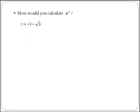How would you calculate z to the 5 if z is equal to minus 1 minus the square root of 3i? z to the 5 means multiplying minus 1 minus the square root of 3i by itself 5 times. That is not complicated but it is long, and just think about what happens if you change the 5 to a 10 or to a 1000 — then it would be too long a process.